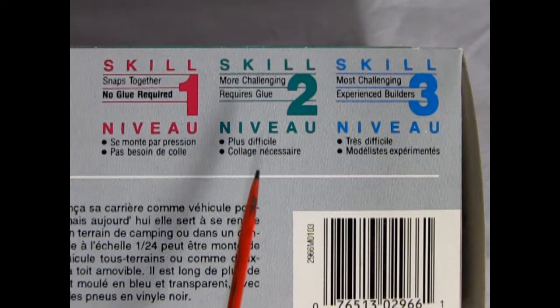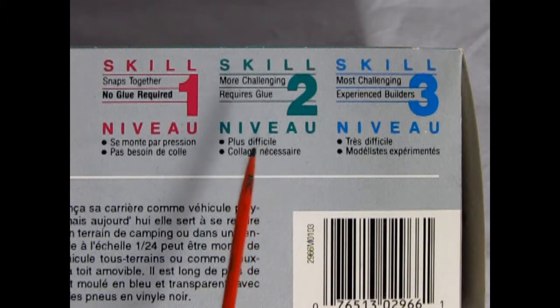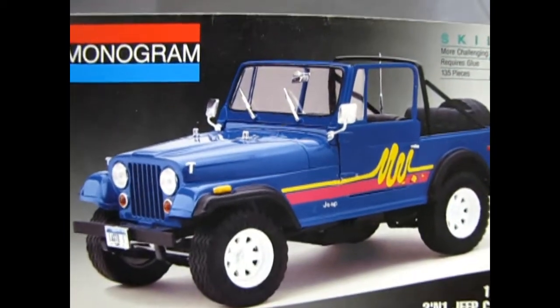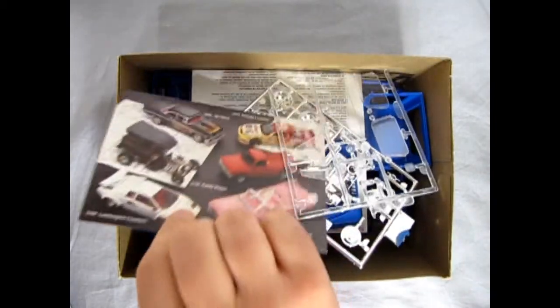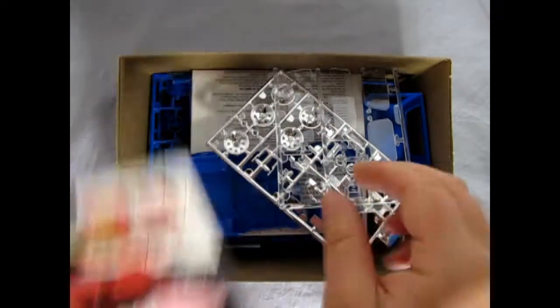This Jeep is a skill level 2 model kit designed for the intermediate builder. As we lift off the lid of our box we immediately see all our plastic parts as well as this great catalog picture from 1993.